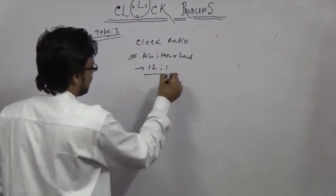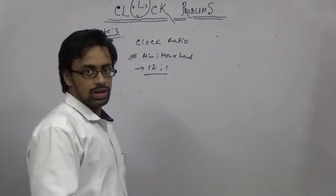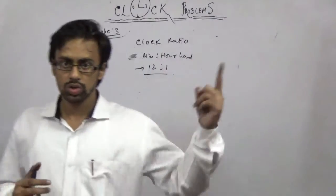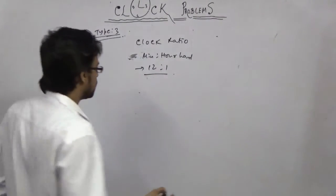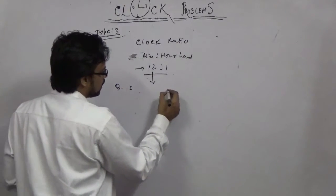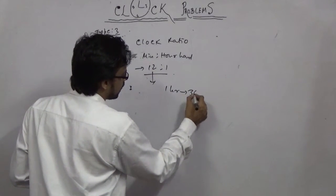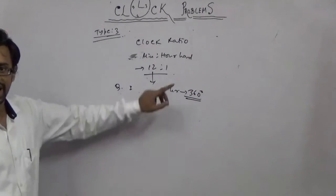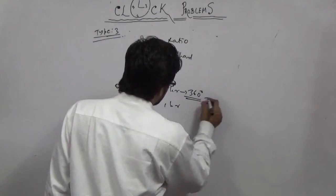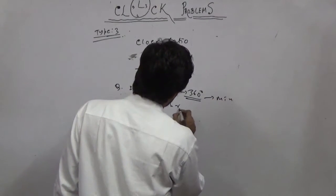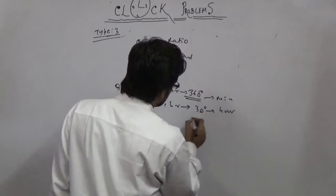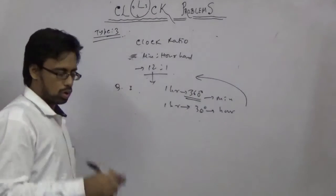The minute hand and hour hand move at a ratio of 12 to 1. In 1 hour, the minute hand covers 360 degrees. With respect to the hour hand, 1 hour is 30 degrees. So the speed ratio is 12 to 1.